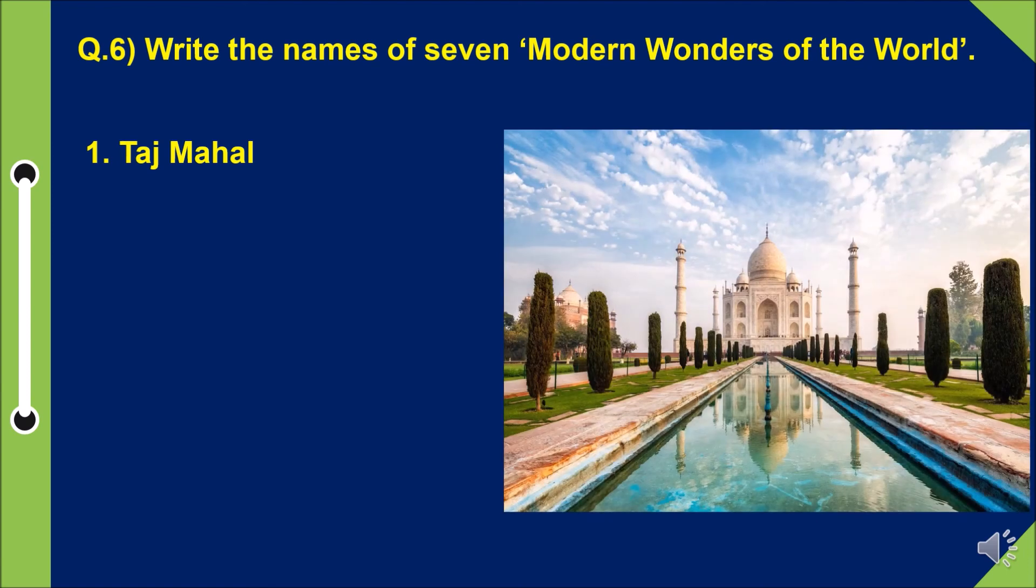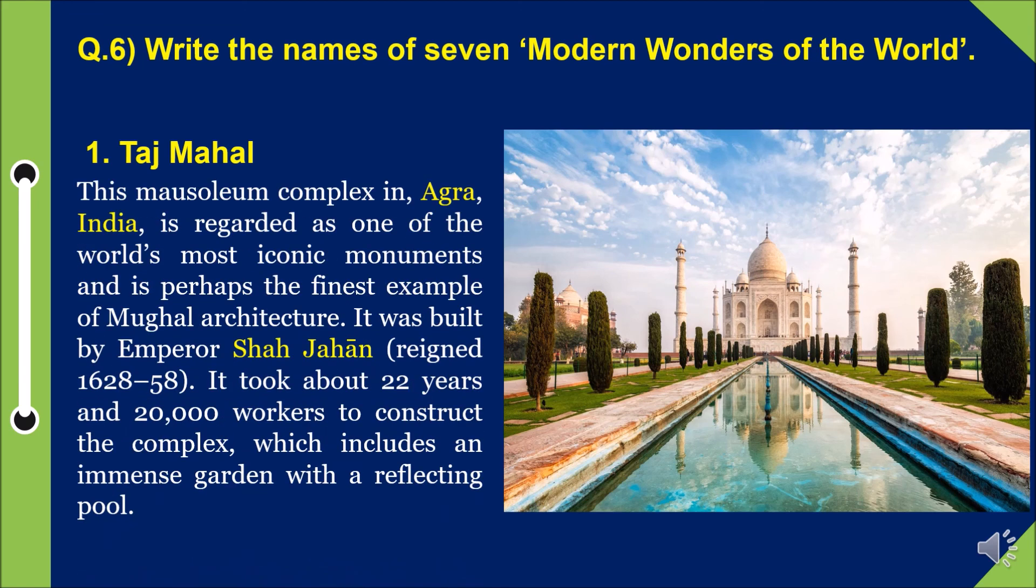This mausoleum complex in Agra, India is regarded as one of the world's most iconic monuments and is perhaps the finest example of Mughal architecture. It was built by Emperor Shah Jahan, who reigned from 1628 to 1658. It took about 22 years and 20,000 workers to construct the complex, which includes an immense garden with a reflecting pool.